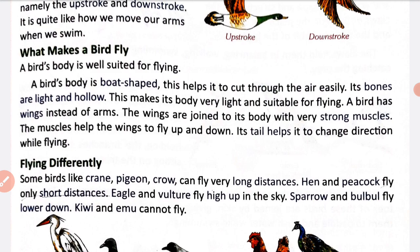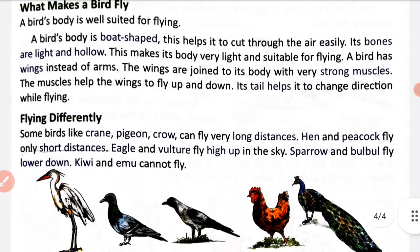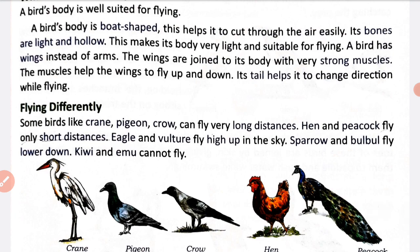Birds' bones are light and hollow, and this makes their body very light and suitable for flying. Inki bones jo light hoti hain inki body ko halka banati hain, jisse ki unko udne mein aasaan ho jata hai. A bird has wings instead of arms - jaise ke hamare arms hote hain, uski jagah birds ke wings hote hain.